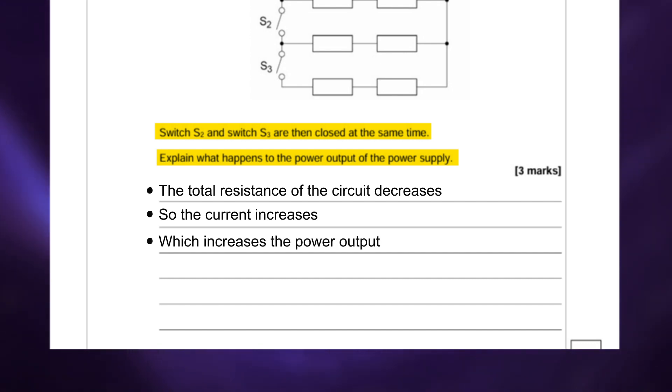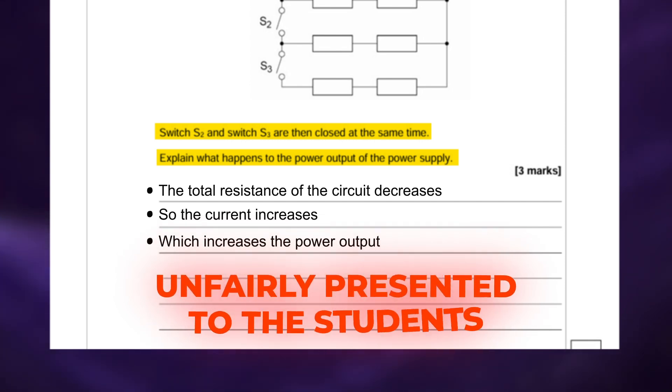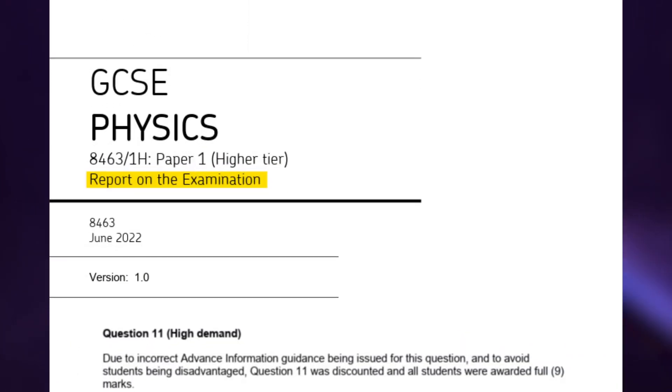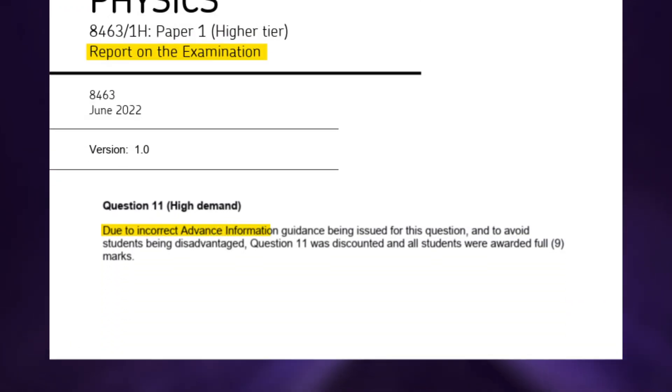And I'm sure that you've been waiting to find out which question was unfairly presented to the students and this was the entirety of question 11. So the examiner's report states that due to incorrect advanced information guidance being issued for this question and to avoid students being disadvantaged, question 11 was discounted and all students were awarded full marks.